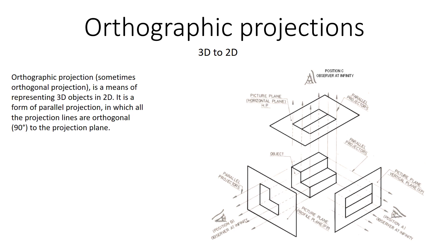Orthographic projections — what are we talking about here? Orthographic or orthogonal projections are how we take a three-dimensional object and project it onto a two-dimensional piece of paper or computer screen. It's a form of parallel projection, where all lines are perfectly parallel to one another, so things don't diminish and get smaller as they go farther away — like being very close up to something.